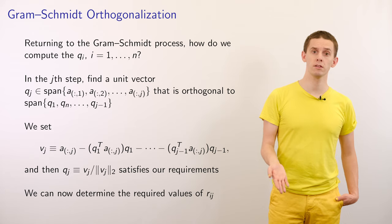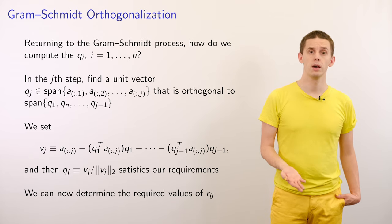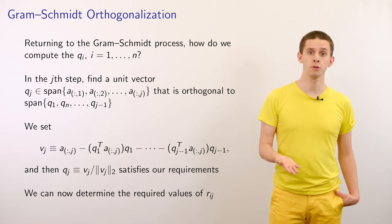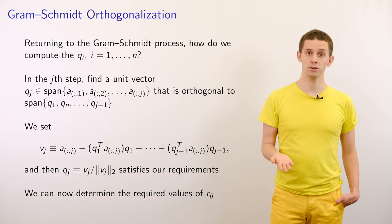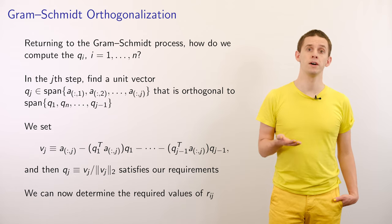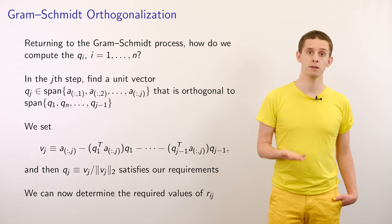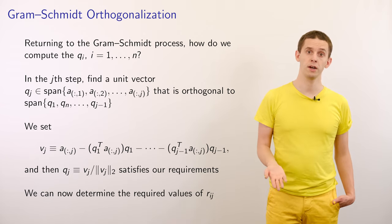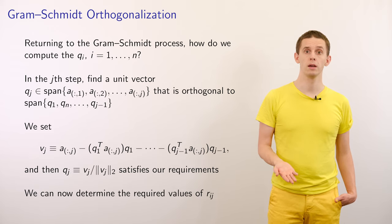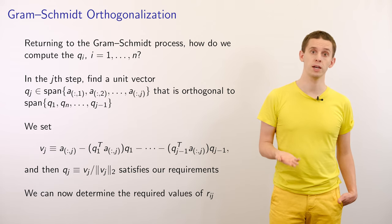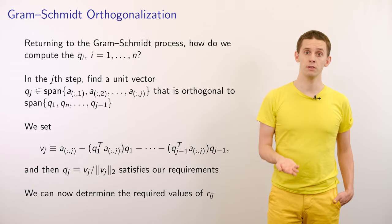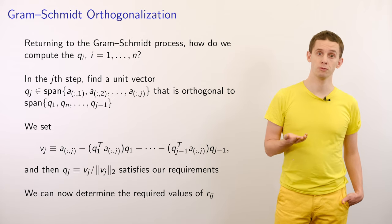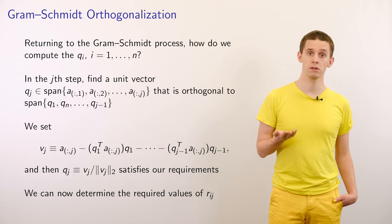Returning to the Gram-Schmidt process, we calculate vectors qi for i = 1 to n. At the jth step, we find a vector qj contained within the span of the first j columns of A, but orthogonal to the span of q1 through qj-1. We do this by constructing vj equal to the jth column of A minus the projections: subtracting terms q1ᵀaj·q1 through qj-1ᵀaj·qj-1. Each subtracted term orthogonalizes vj with respect to one of the previous q vectors.